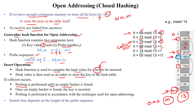Next, inserting 14: 14 mod 13 gives index 1, which is already filled with 79. We search for the next free memory location contiguously. Index 4 is filled, index 5 is filled, index 7 is filled. The next free memory location is index 9, so we store 14 at index 9. The probing must be checked contiguously — not randomly — checking consecutive memory locations to see if they are free.